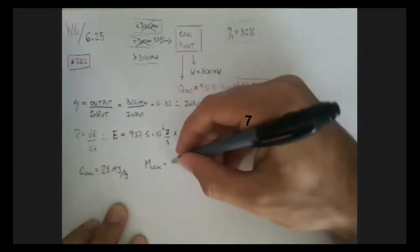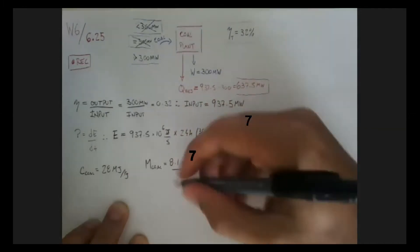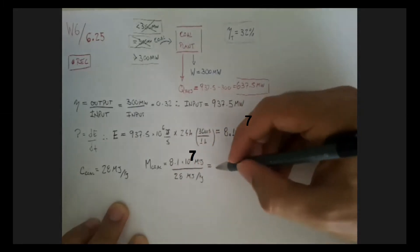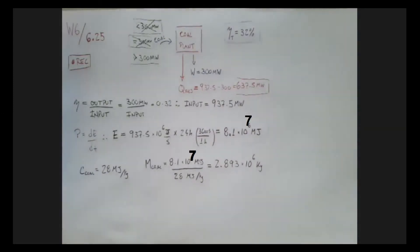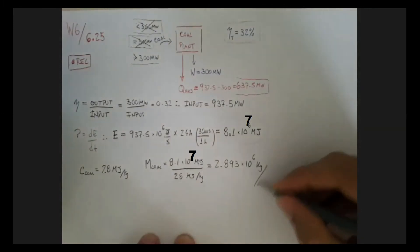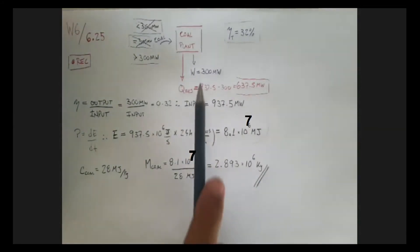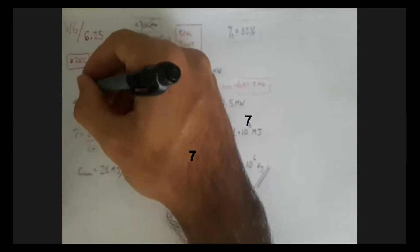Mass of coal will be the 8.1 times 10 to the 7 megajoules divided by 28 megajoules per kilogram. I'm going to have my answer in kilograms. And this is about 2.893 times 10 to the 6 kilograms. So this is, according to our calculations, the amount of coal I need to put into this plant over a 24-hour period, so that this plant can generate energy at a rate of 300 megawatts. That's part A of our problem.